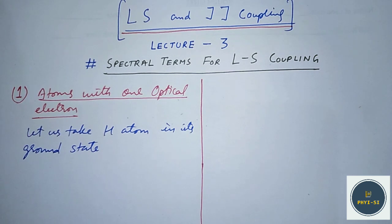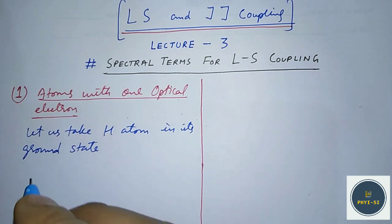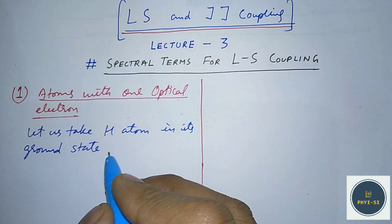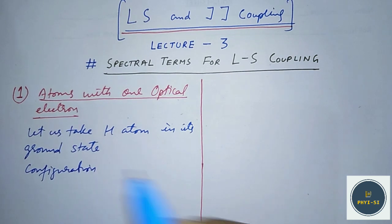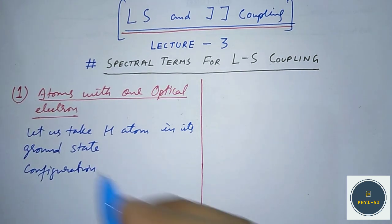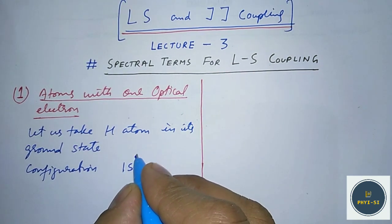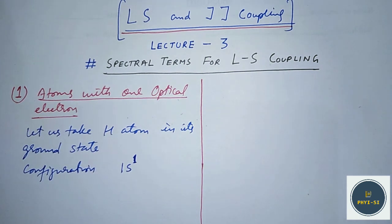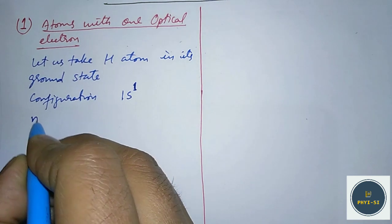First of all we'll find the spectral term for the ground state, and then we'll study about the spectral term of the excited state. The electronic configuration of the hydrogen atom in its ground state is given by 1s1.